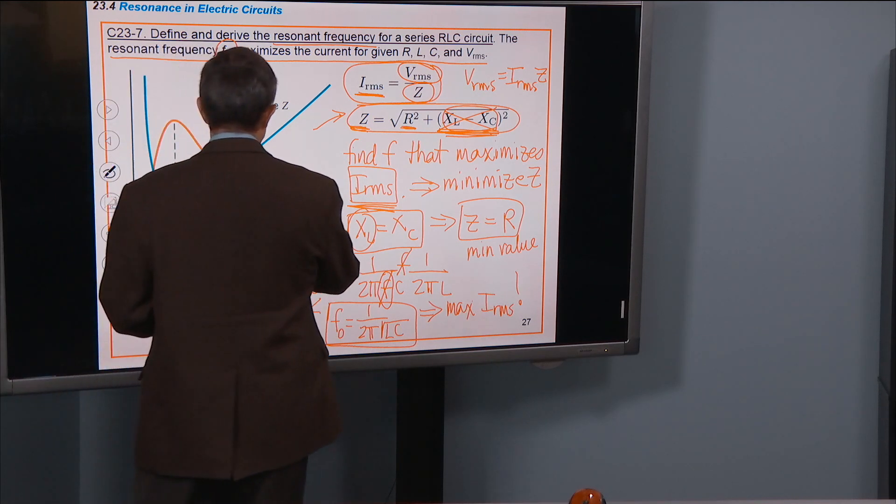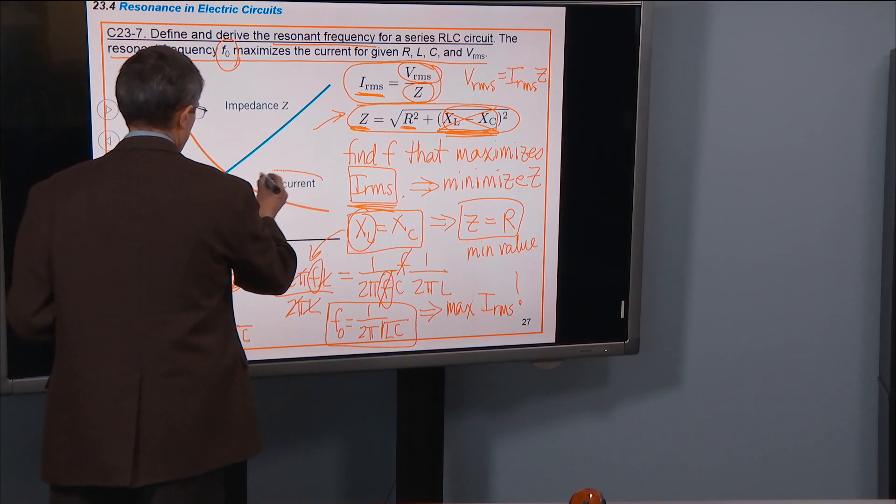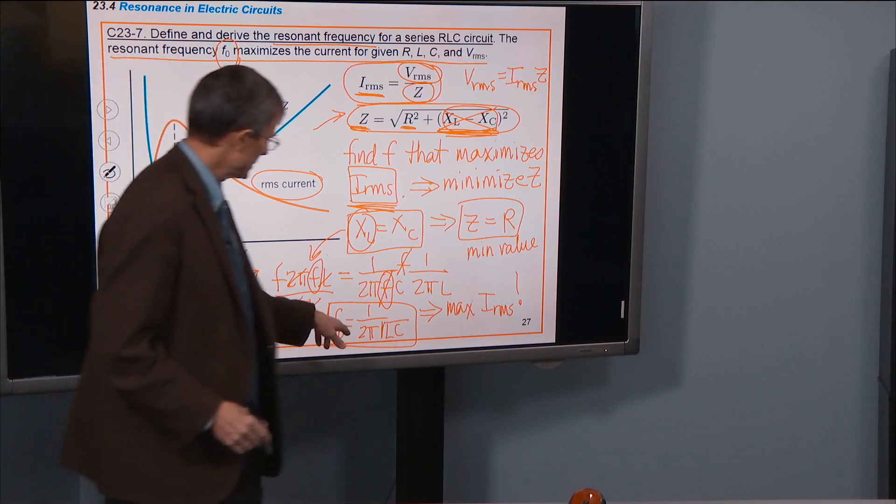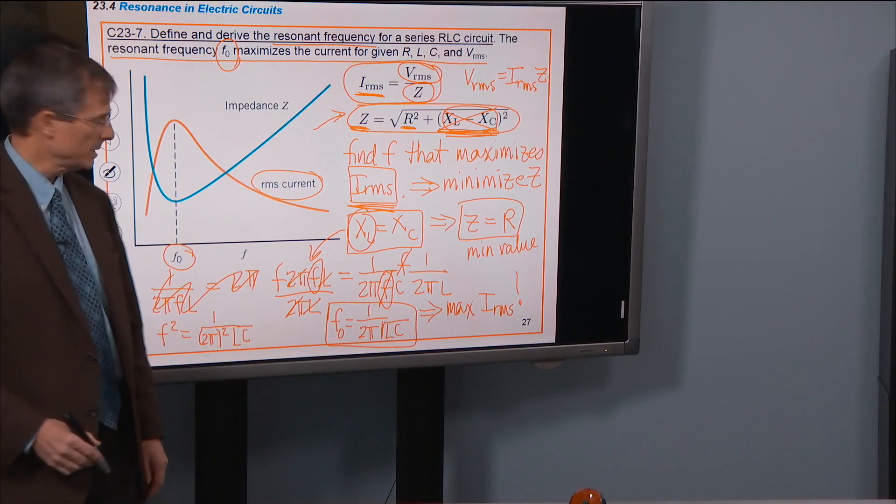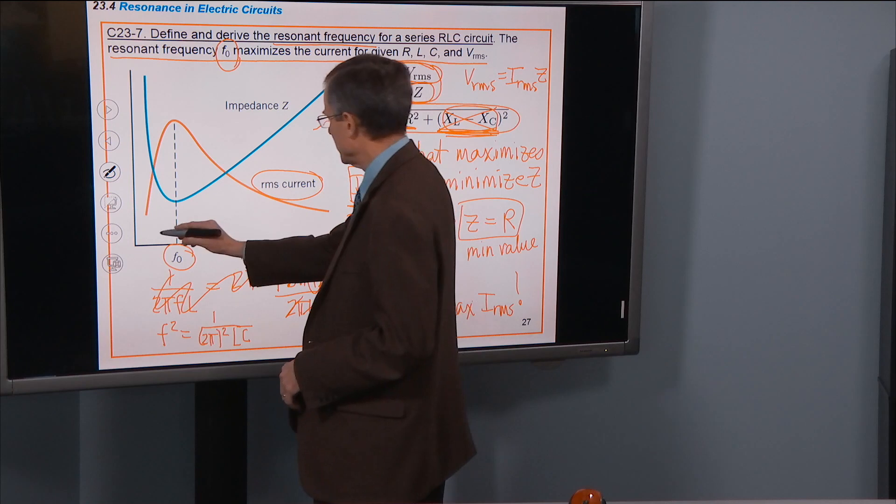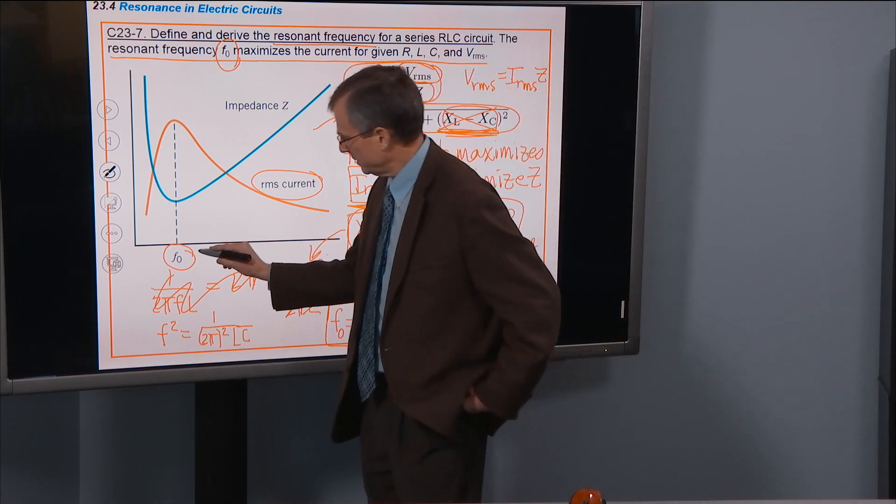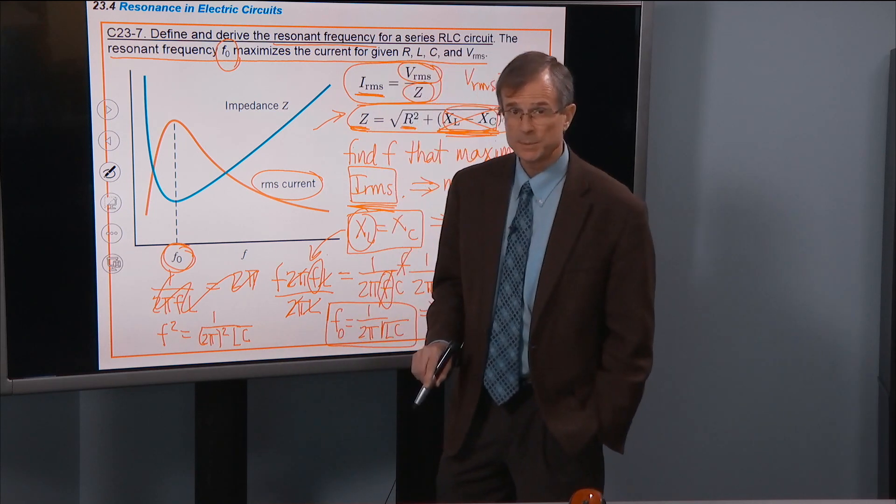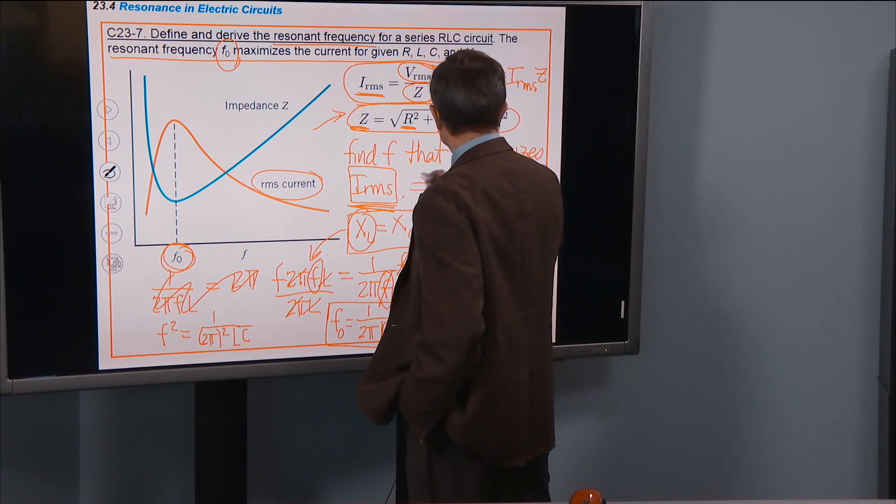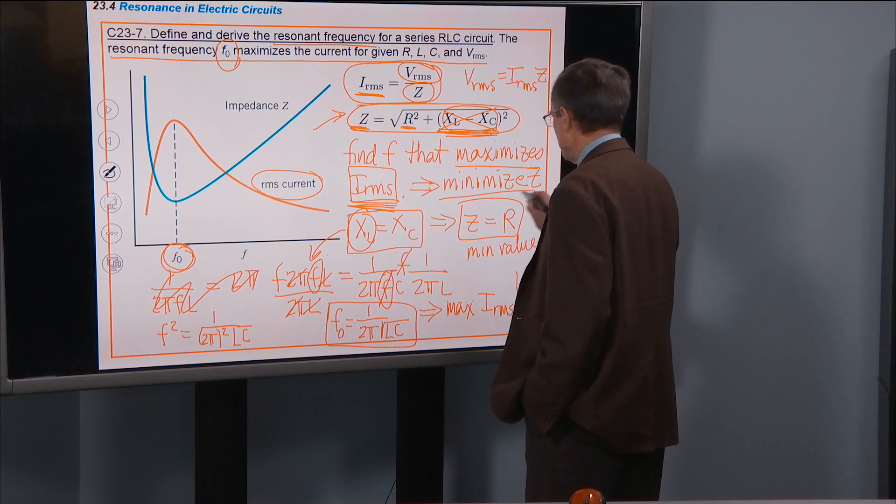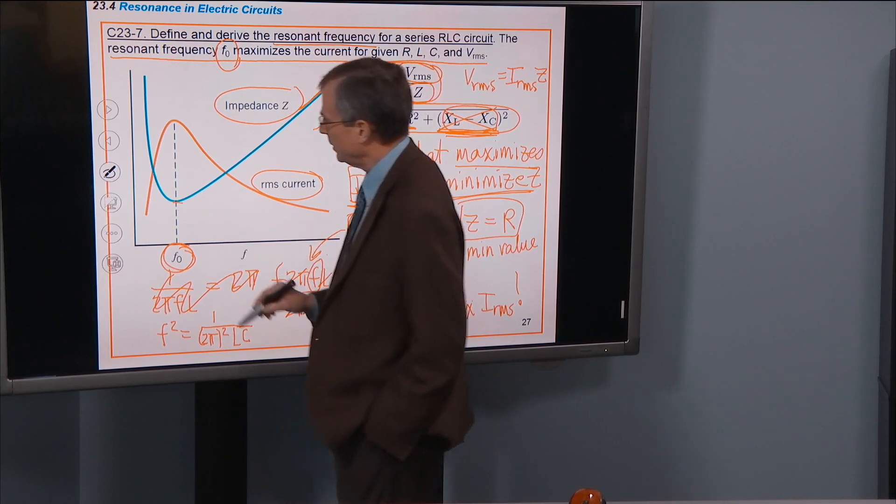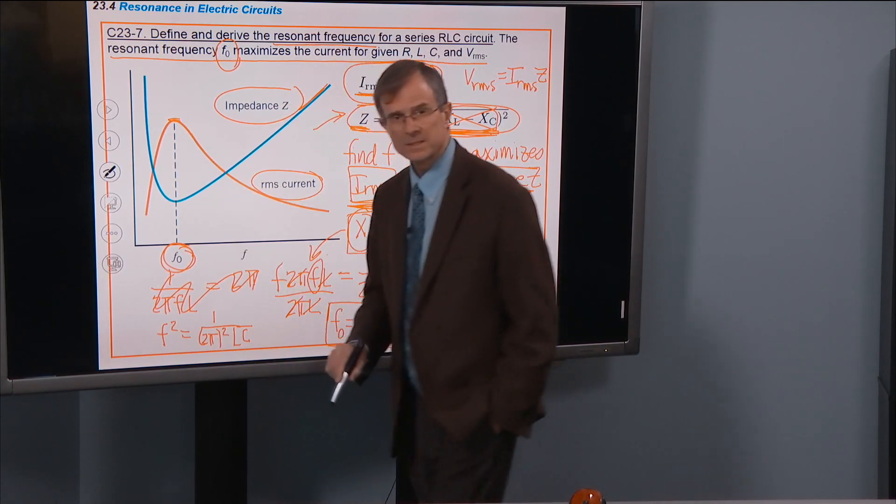Graphically, it looks like this. This red curve represents RMS current, which reaches a maximum at this frequency, which is 1 over the 2π squared of LC. This is, what I'm doing is actually plotting the RMS current as a function of frequency, and that's where it reaches its peak. Well, the frequency, as we talked about at the beginning, to maximize the current, you have to minimize Z. So this blue curve represents the impedance, and it's at a minimum where the current is at a maximum.